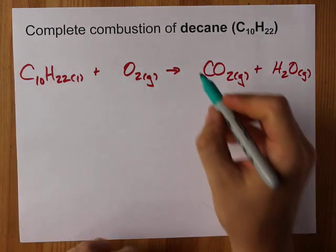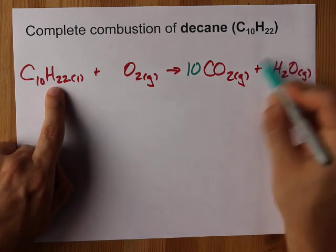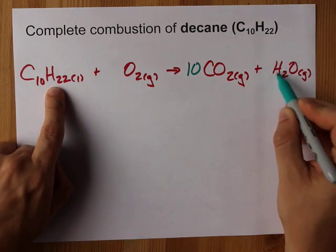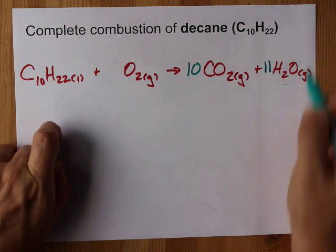10 carbons here. I need 10 carbons here. 22 hydrogens here. I'm going to need 22 here. They already come in pairs for the H2O, so I'm only going to need 11 of those packages.